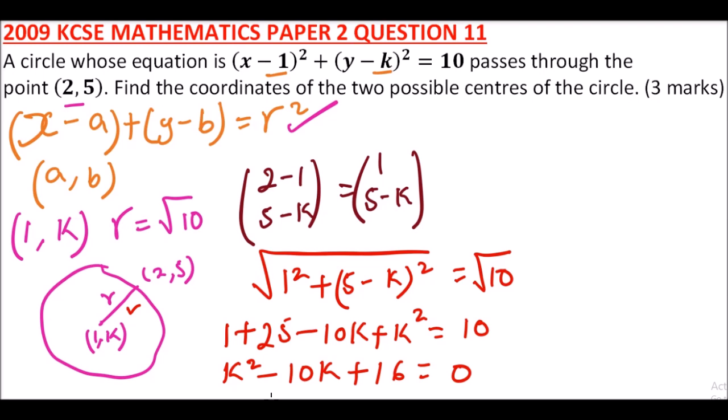you'll be able to get its factors: (k - 2)(k - 8) = 0, implying that k = 2 or 8.